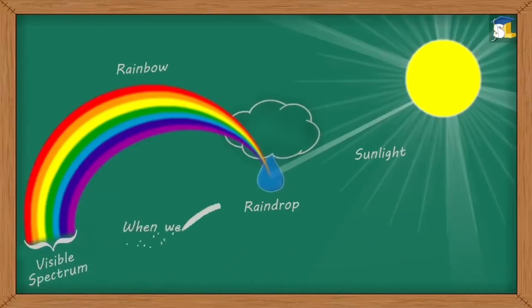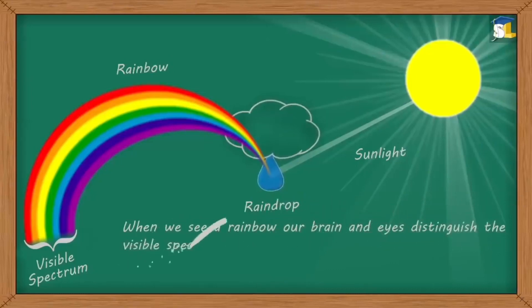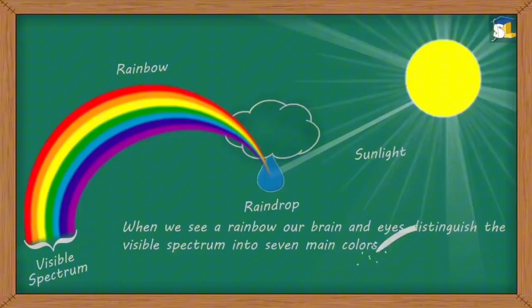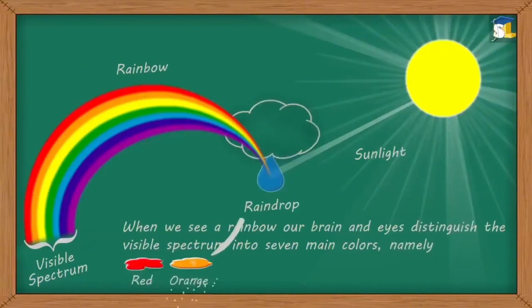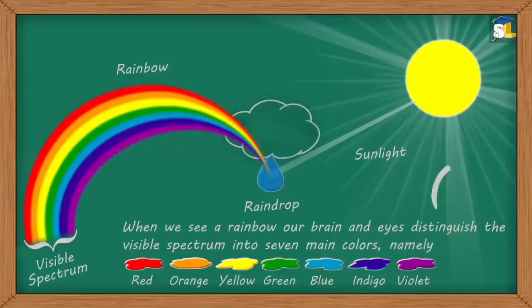When we see a rainbow, our brain and eyes distinguish the visible spectrum into seven main colors, namely red, orange, yellow, green, blue, indigo, and violet.